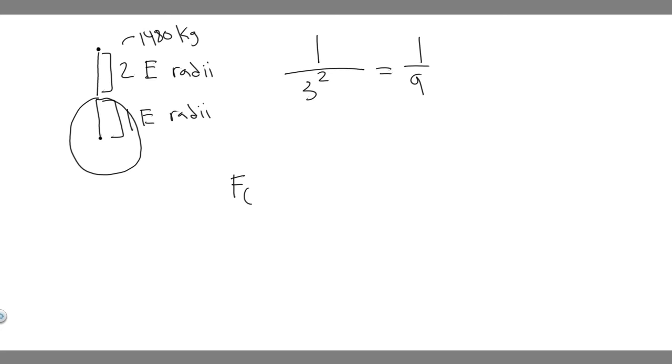And so we know F_g, the force of gravity, if it was super close to the surface, if it was right here, it would just be mg. So we know it's going to be 1 ninth of it because it's 3 radii away. So it's just going to be 1 over 3 squared, which is 1 over 9, and then you just multiply this by mg.